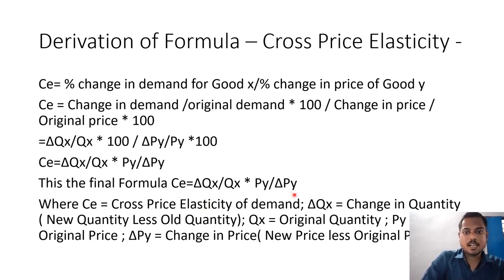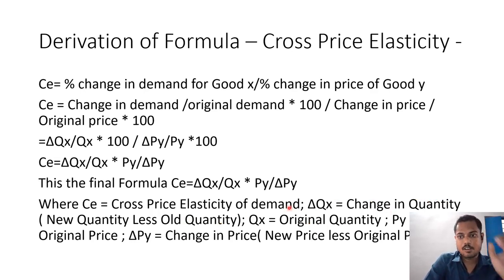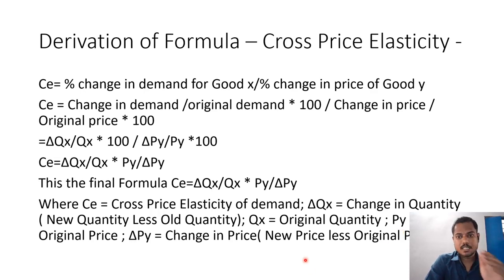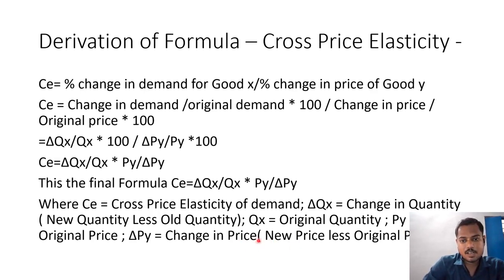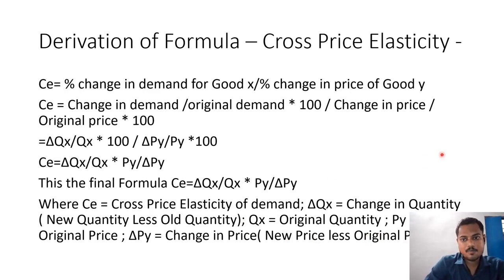Where C is the cross price elasticity of demand, ΔQx is the change in quantity of good X (new quantity minus old quantity), Qx is the original quantity of good X, Py is the original price of good Y, and ΔPy is the change in price of good Y, calculated as new price minus original price.